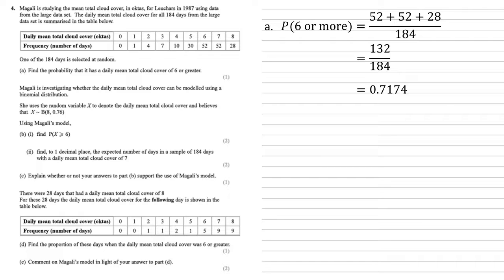Using Magali's model, for part B we need to find the probability that X is larger than or equal to 6. I'm just going to do this on the calculator, but using the calculator we get probabilities of X smaller than or equal to, so we're going to convert that. The probability of X larger than or equal to 6 equals 1 minus the probability of X smaller than or equal to 5. Putting that into the calculator with our 5, our sample size 8, and our probability of 0.76 gives us 0.296722. Taking that away from 1 gives us an answer of 0.7033 to 4 decimal places.